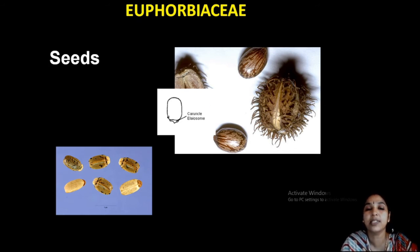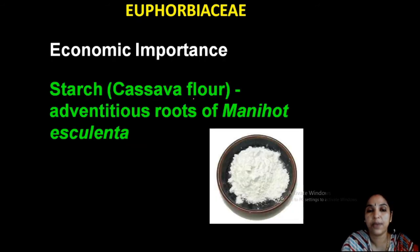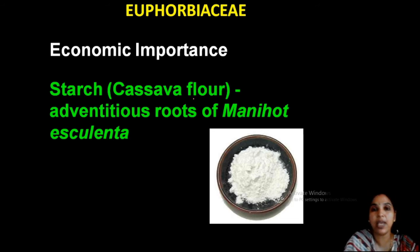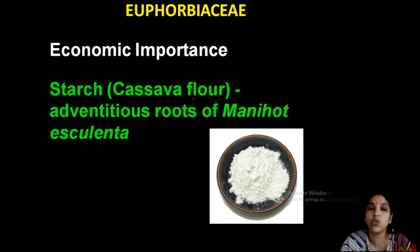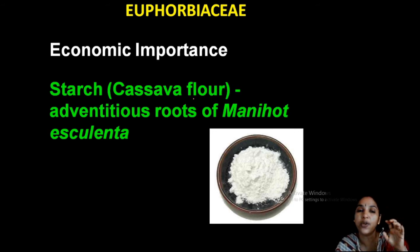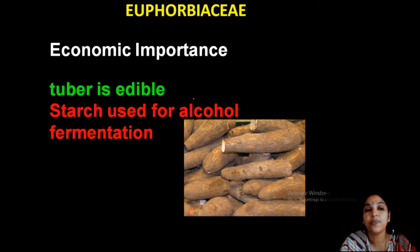The caruncle is a projection on the seed — you can see it here. Now looking into the economic importance of the family — it is highly economically important. Starch is extracted from Manihot — cassava flour, also called kappa starch — used for starching clothes and as an advantageous root crop yielding huge amounts of starch. The tuber is edible and used for alcohol fermentation.